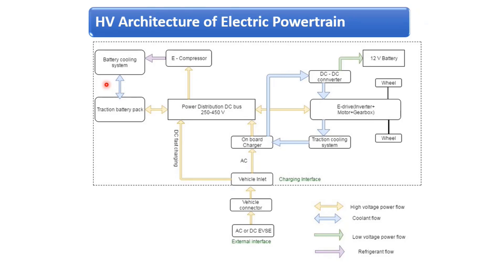To understand AC and DC charging, consider a mobile phone charger analogy. When charging a mobile, the adapter converts AC into DC — this is similar to slow charging. Mobile charger power has increased from 2–3 watts to 50 watts, which is now called fast charging. Similarly, in EVs, increasing the charger power leads to what we call high voltage or fast charging.